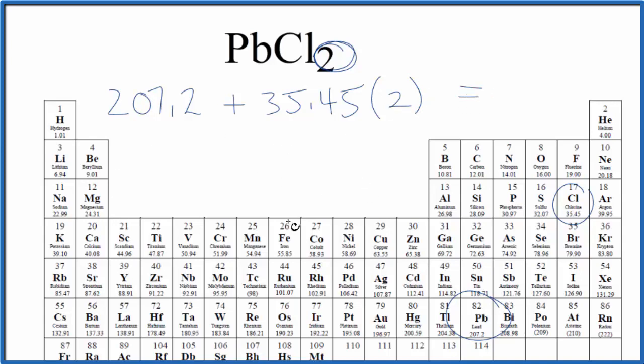When we do this, we end up with the molar mass for PbCl2 of 278.1, and our units are grams per mole.